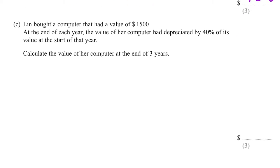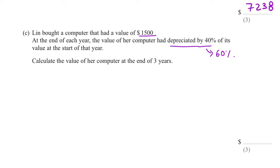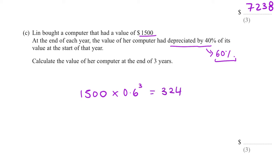Part C: Lynn bought a computer worth £1,500. At the end of each year the value depreciates by 40%. That's a decrease of 40%, so 100 − 40 = 60%. The multiplier is 0.6. Over three years this is compound depreciation: 1,500 × 0.6³ = 324. So her computer worth £1,500 is only worth £324 three years later.